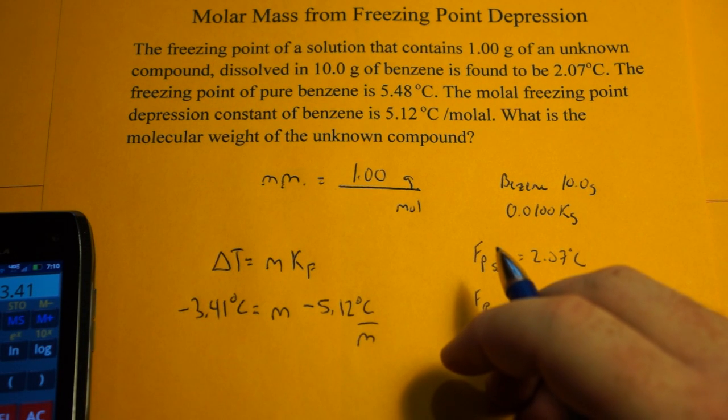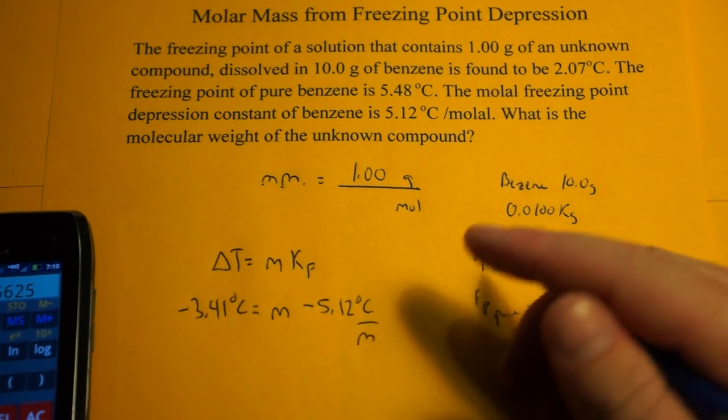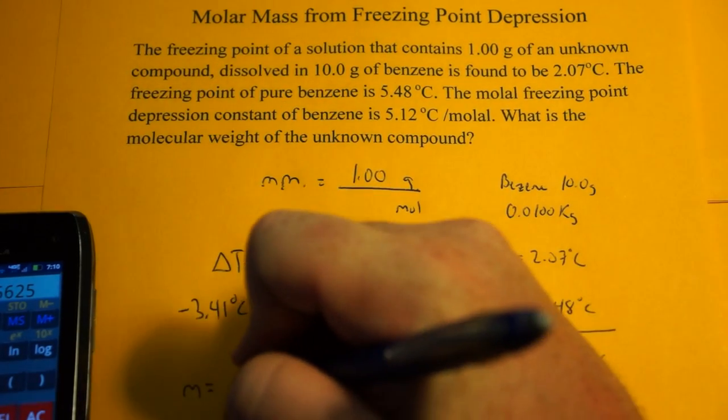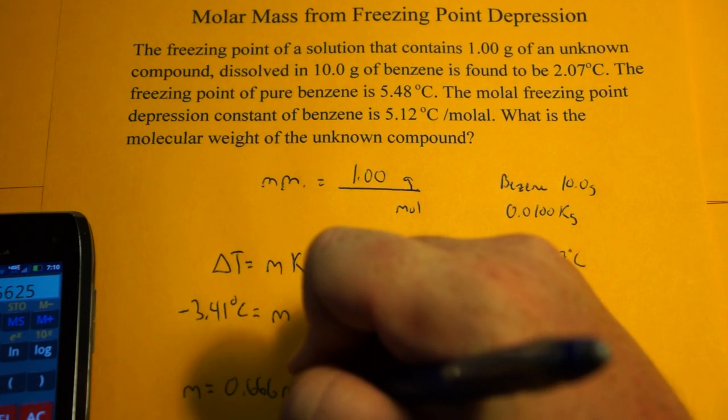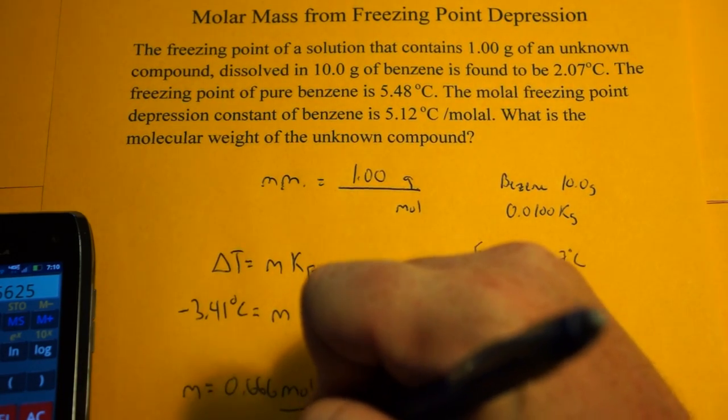So let's just divide by 5.12. And you get your molality is equal to 0.666 moles per kilogram of solvent.